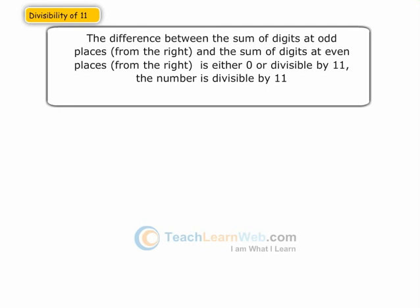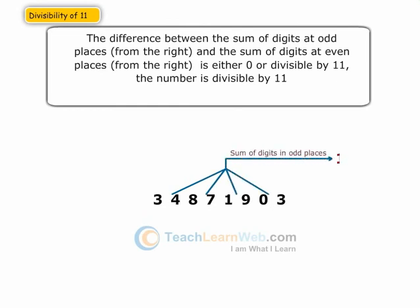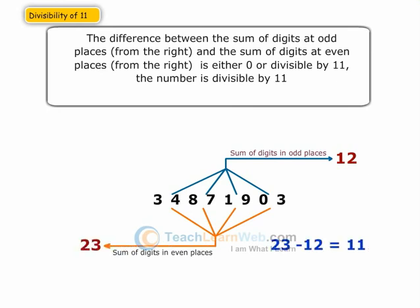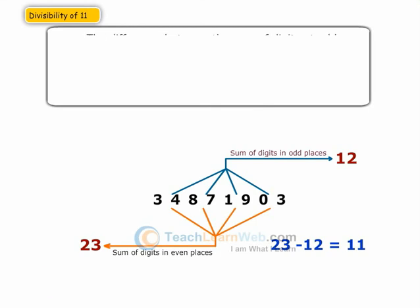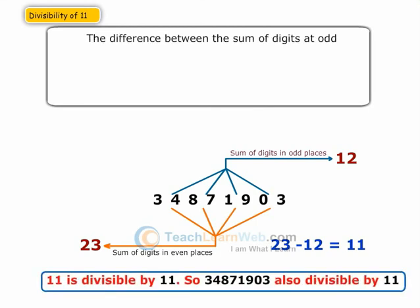For example, consider the number 34871903. From the right, the odd places have a sum of 12, while from right, the numbers at the even places have the sum 23. The difference between these is 11, which is a multiple of 11.